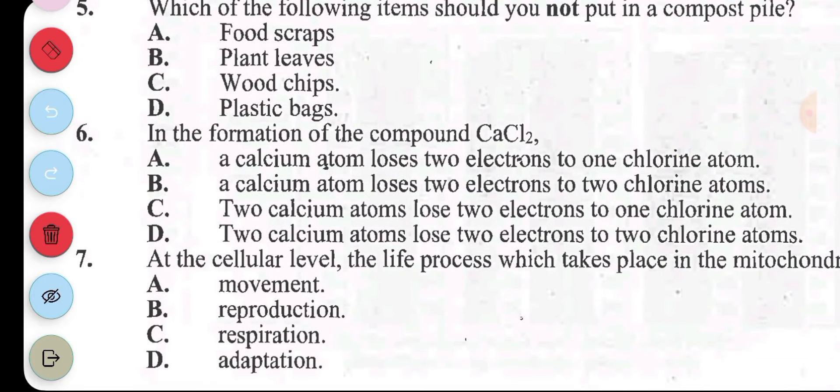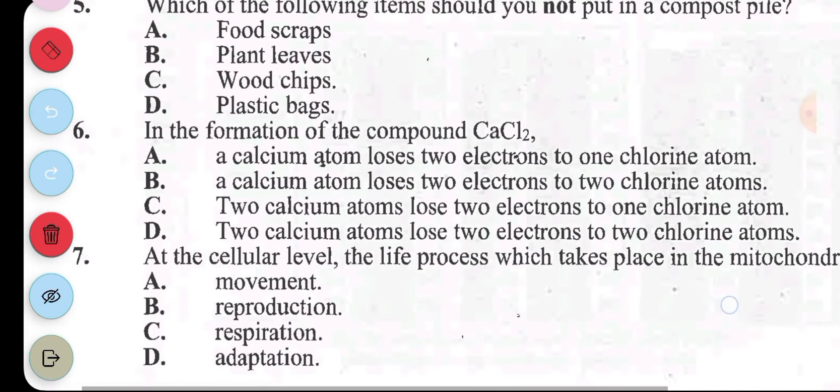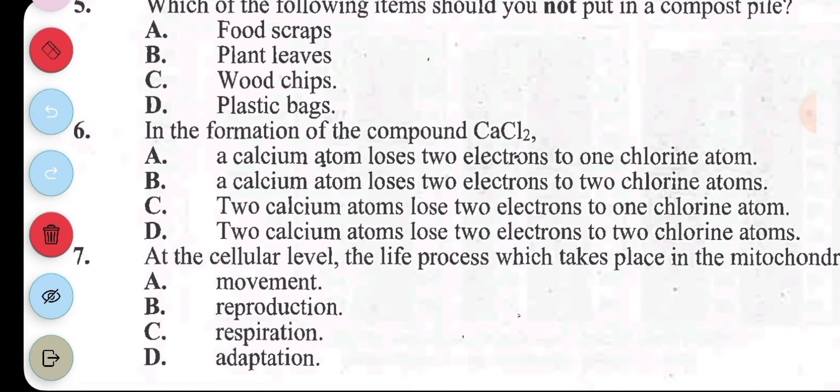Question 7: at the cellular level, the life process which takes place in the mitochondria, the mitochondrion is A, movement. B, reproduction. C, respiration. D, adaptation. The answer to this is C, respiration.